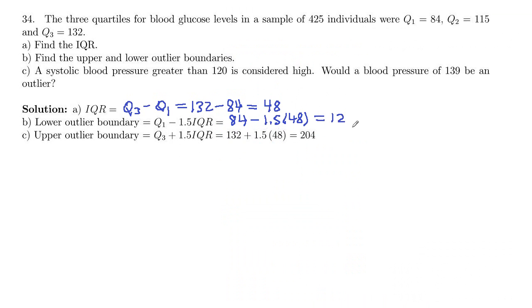And then for the upper outlier boundary, you take Q3 and you add the 1.5 IQR. So 132 plus 1.5 times 48, and that gives us 204.